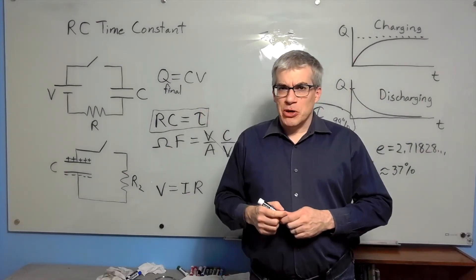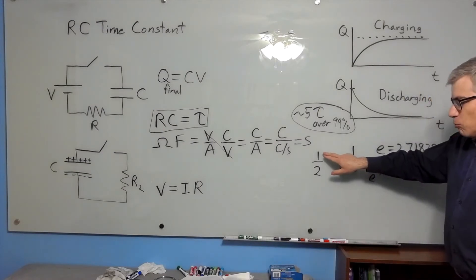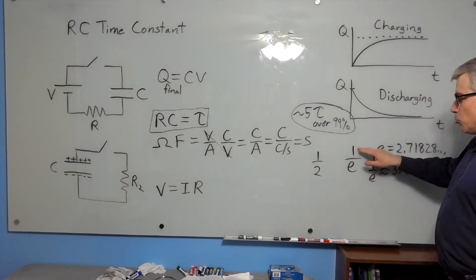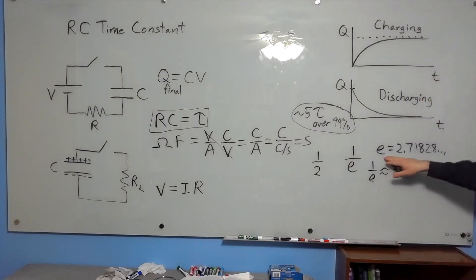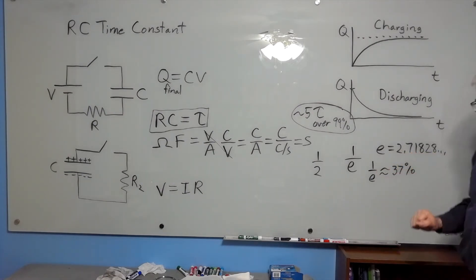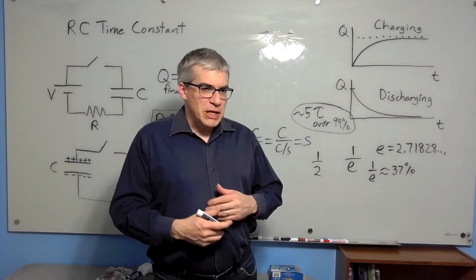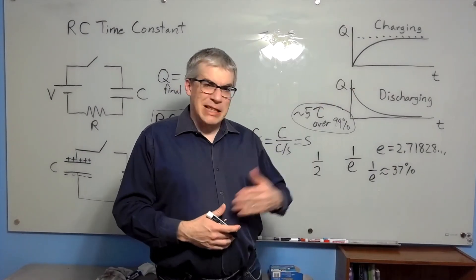Without that, it would be what we would call an e-life. Instead of waiting for 1 over 2 to be left, we wait for 1 over e to be left, where e is Euler's number, 2.718 and so on. 1 over e is about 37 percent. So instead of being 50 percent done, we're going until 63 percent done.